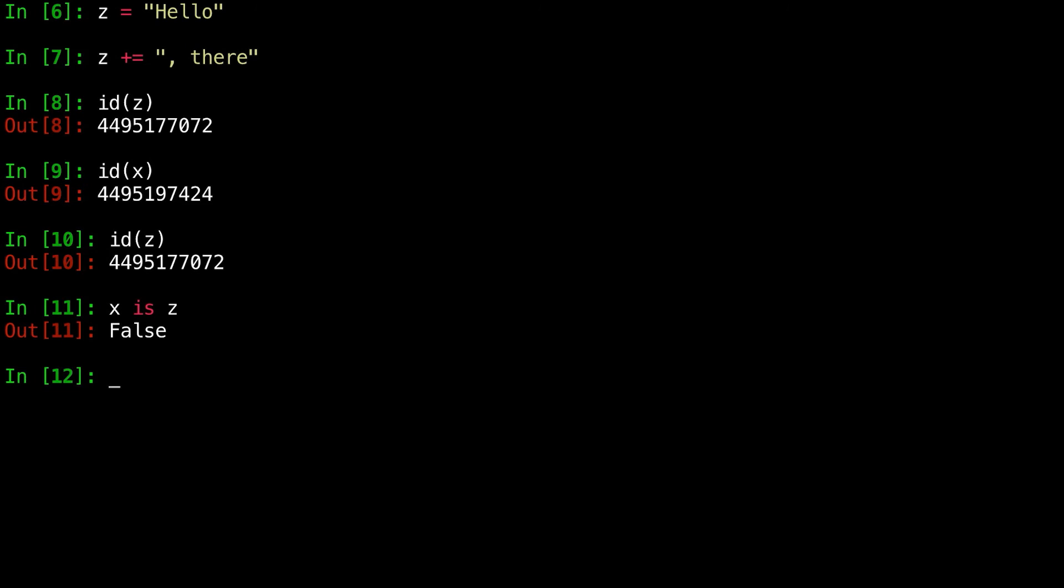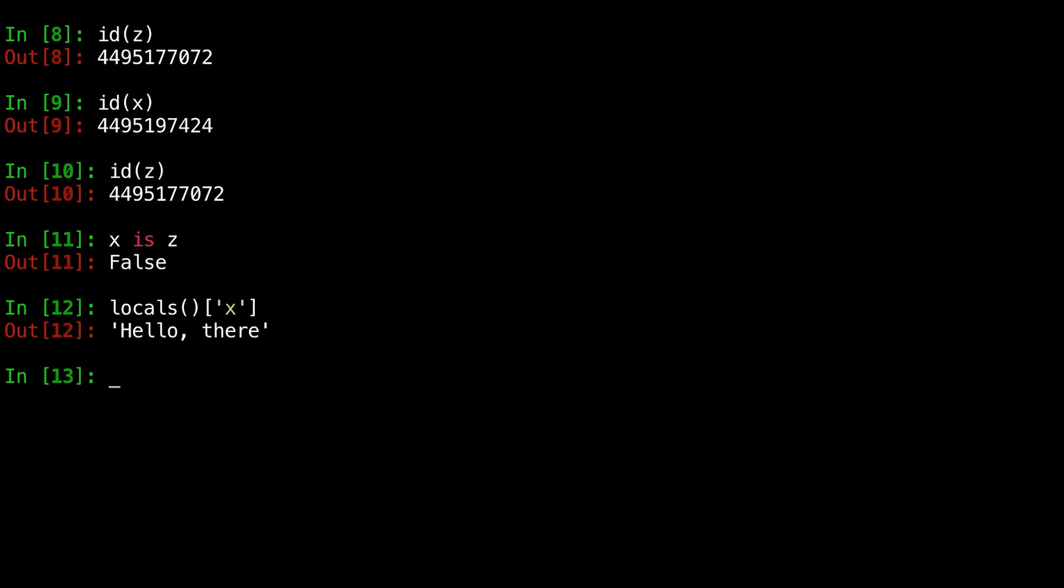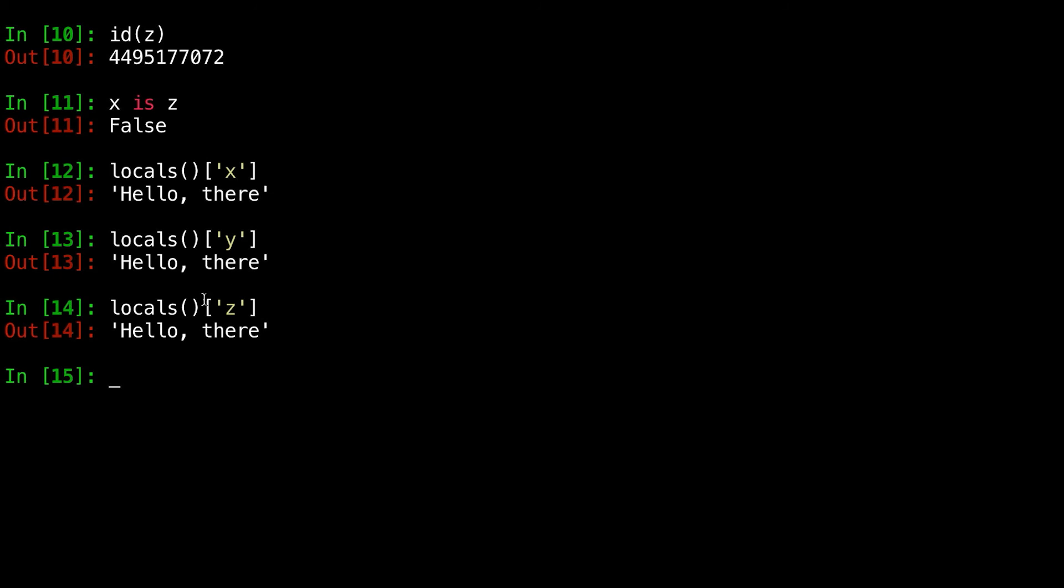One thing we can use to access this information is we can use the locals built-in function to try to access the namespace in the local environment. So if we ask for the locals association at x with syntax that's currently mysterious but that will eventually become clear, we see that x refers to some name, y refers to some object, and z refers to some object. So this locals mysterious thing is somehow maintaining information between names, in this case as strings, and the Python objects we're working with. So the real key thing here is the idea that namespaces are associations between names and objects, and variable assignment changes references but does not create new objects.